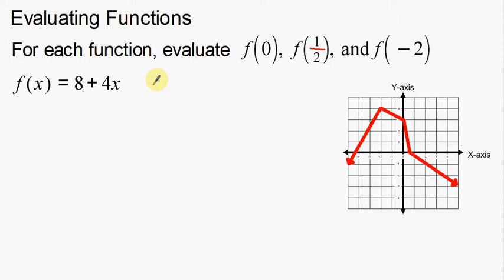Basically what function notation is designed for is to very easily figure out your inputs and your outputs. This is the notation that we use — the symbols, language, and letters — to tell us what we want to do. In a certain function called f, we want to plug in the number zero; in another, one half; and in another, negative two. So basically what I want to do is take this function and plug in these different numbers. That's basically all it means.